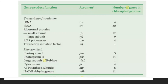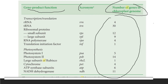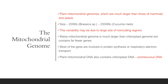These are some of the gene product functions, acronyms, and number of genes in chloroplast genomes for particular species. You may pause the video to check each and every part in detail.